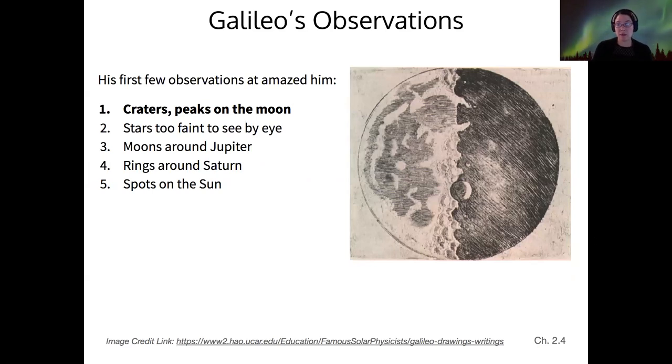Some of the things that he observed were really amazing. Here's an image of the moon sketched by Galileo, where he could actually see craters on its surface and mountains. This was contradictory to the perspective of the time that the moon was some kind of perfect celestial body, and these imperfections called that into question.